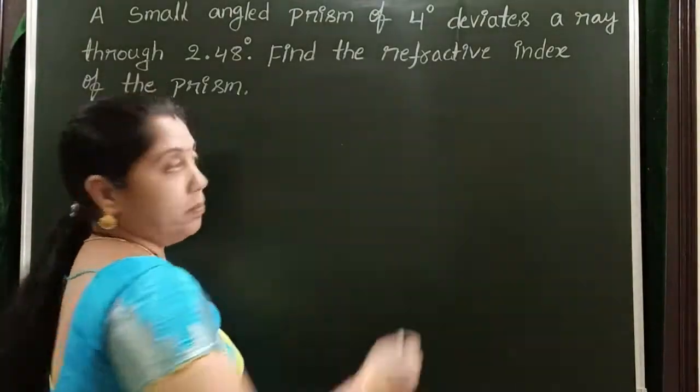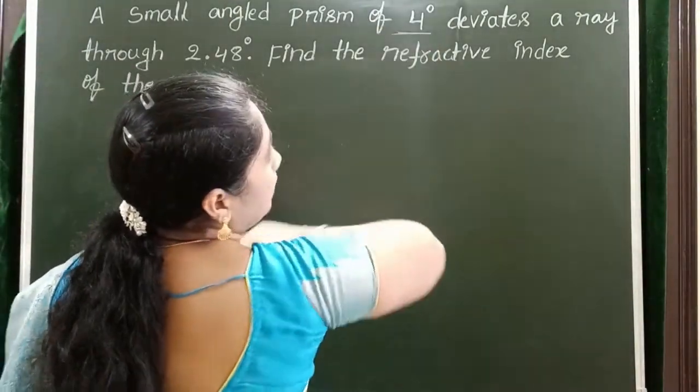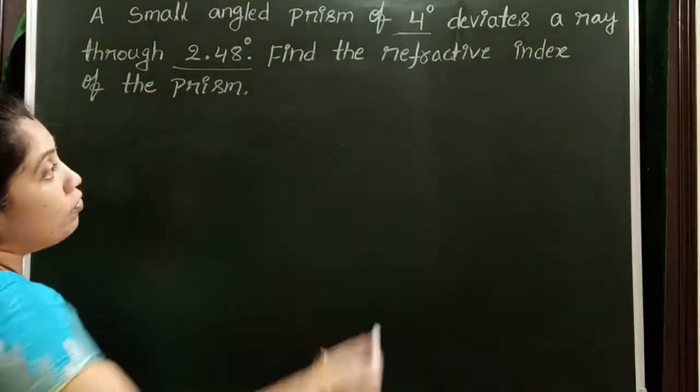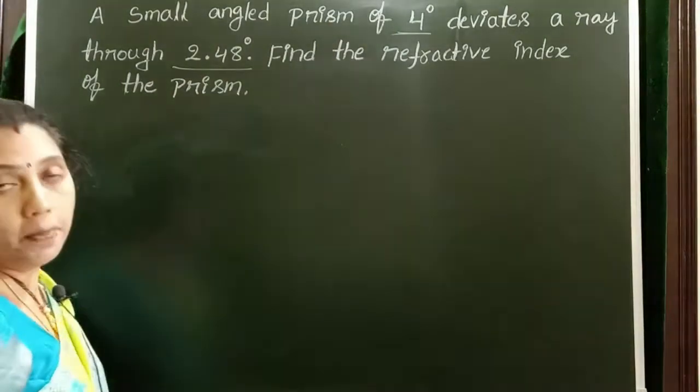A small angled prism of 4 degrees deviates a ray through 2.48 degrees. Find the refractive index of the prism.